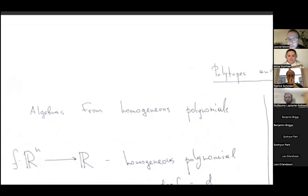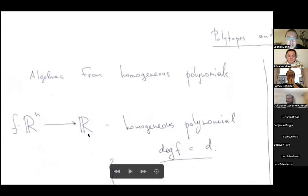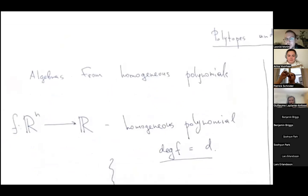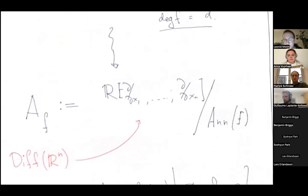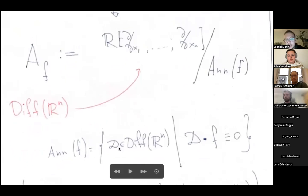Let me start with a very concrete construction from commutative algebra. If you start with a homogeneous polynomial on R^n of degree d, you can associate to this polynomial an algebra obtained by taking the polynomial ring in partial derivatives — specifically, the polynomials in partial derivatives which completely annihilate our polynomial — and take the quotient algebra by the annihilator of f.